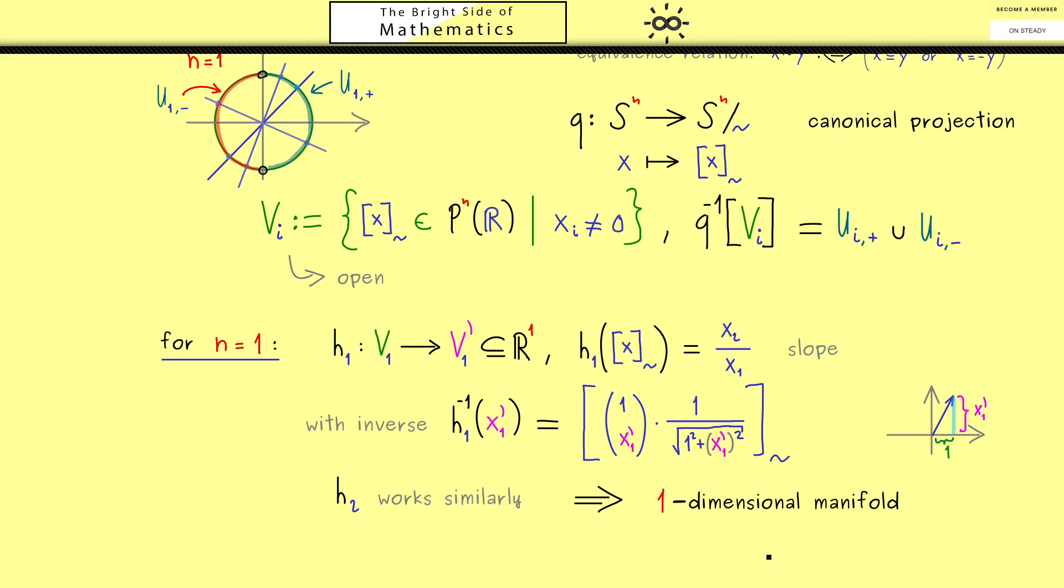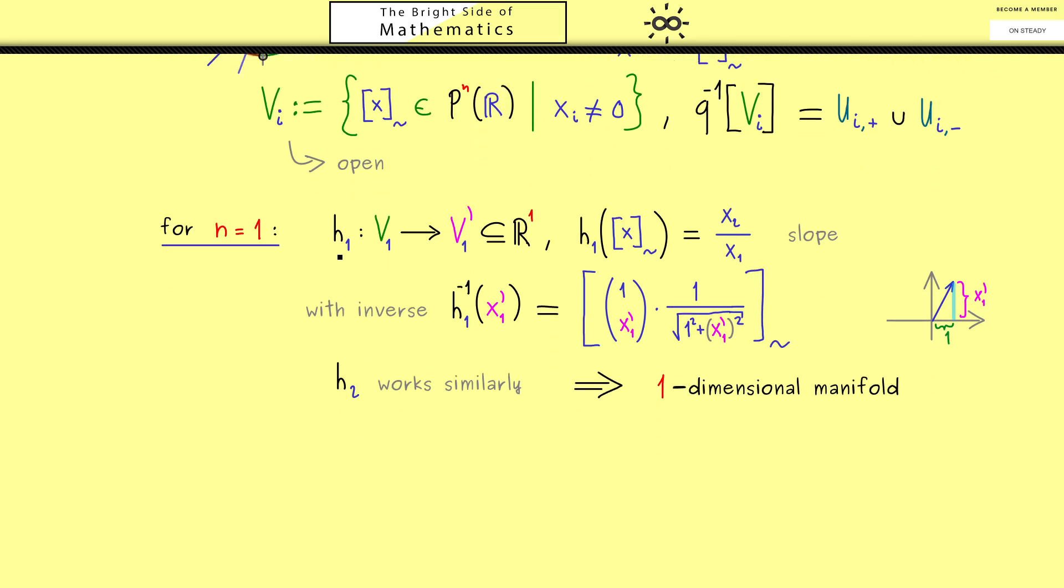And in the end this was not so hard to show. Of course now you could ask how do we do this for the general case, so for P^n(R). And indeed it turns out the idea is completely the same. We just have to add more components. Therefore it might be sufficient that I tell you how h_i is defined. Still we know the domain of h_i; it should be V_i again. However, now the codomain V_i' should lie in R^n. Indeed, as before we will see this is exactly R^n. More precisely this means that h_i sends an equivalence class to a vector with n components.